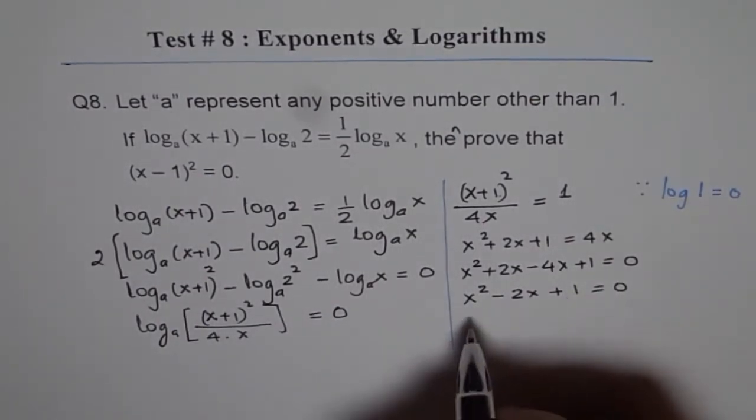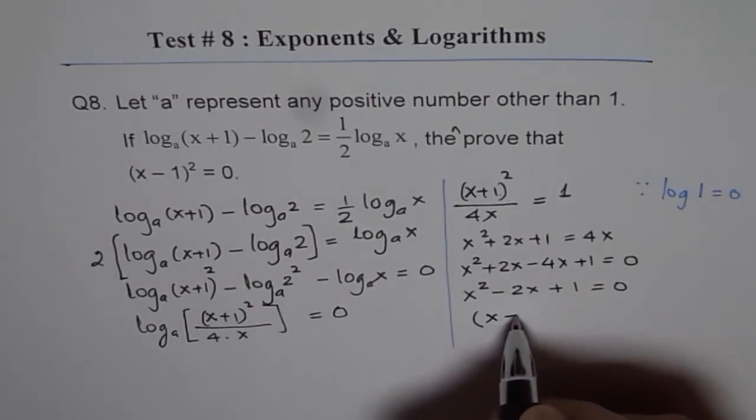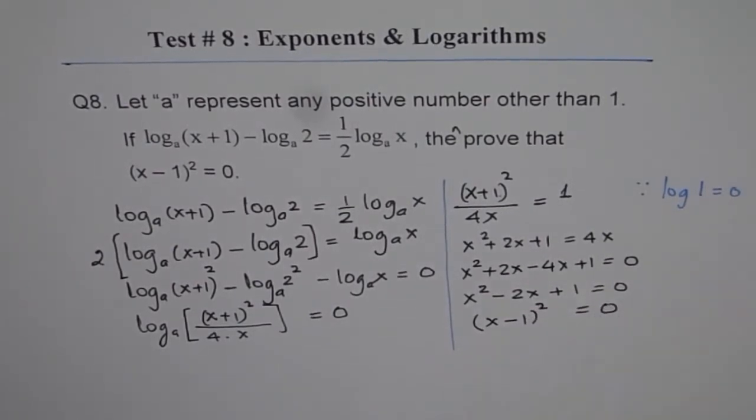And this is a perfect square with x minus 1 whole squared equals 0. And that is what we wanted to prove.